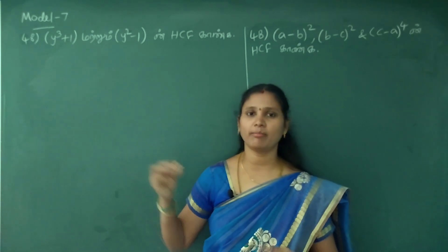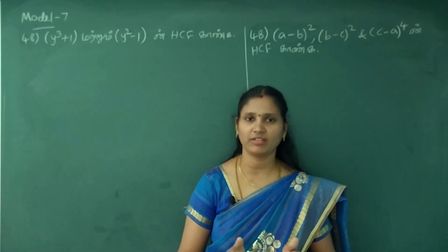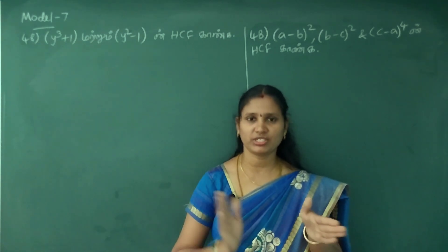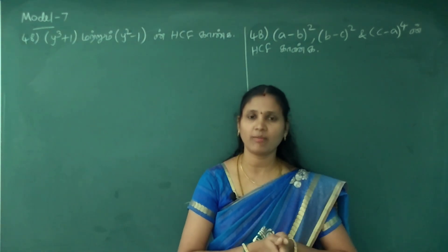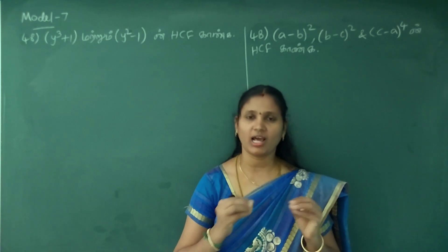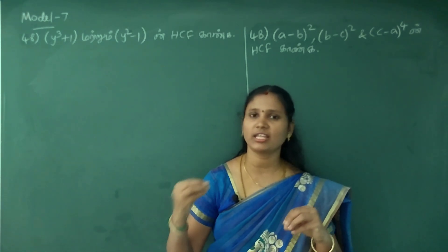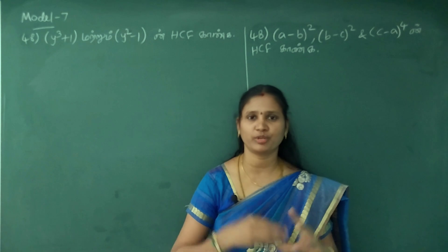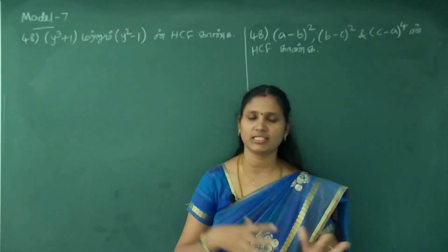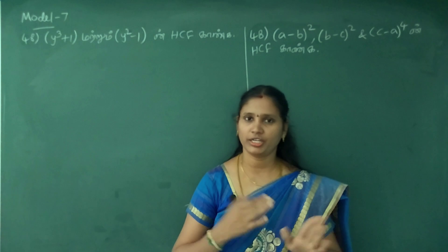If we are looking at model 7, we will take 2 questions. That is a little more simple model. That is why we are writing a sum here. We will take 3 to 7 questions for model 7.